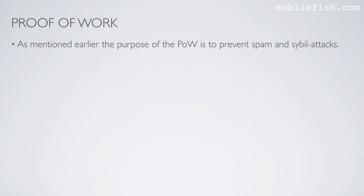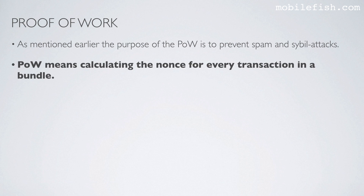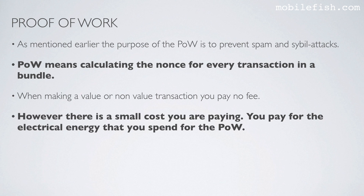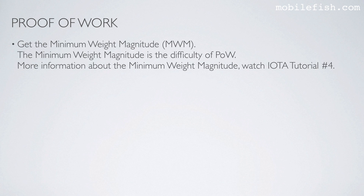The purpose of the proof of work is to prevent spam and sybil attacks. Proof of work means calculating the nonce for every transaction in a bundle. When making a value or non-value transaction, you pay no fee. However, there is a small cost: you pay for the electrical energy spent for the proof of work. To do the proof of work, first get the minimum weight magnitude. The minimum weight magnitude is the difficulty of proof of work — more information is in IOTA tutorial number 4. An IOTA transaction data is encoded and stored in a string of 2673 trits.